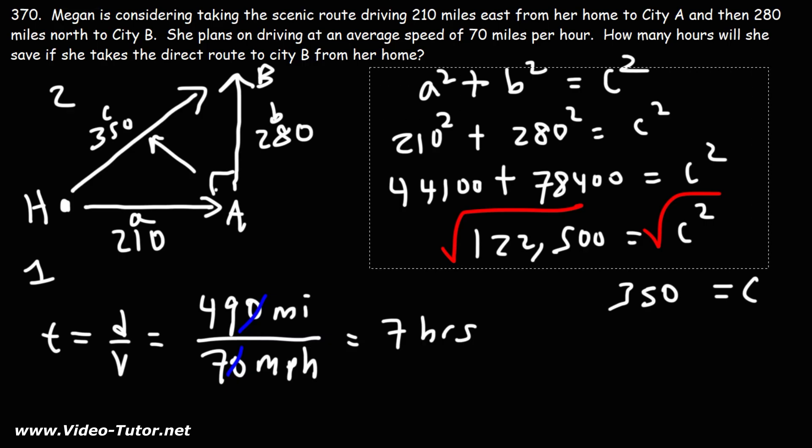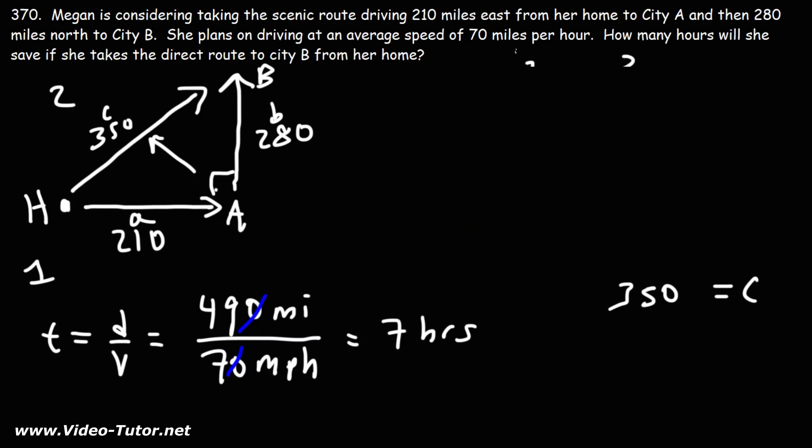So now that we know the distance of taking the direct route from her home to City B is 350 miles, we can find the time it takes to take that route. So 350 miles divided by an average speed of 70 miles per hour. We could cancel a zero. This becomes 35 divided by 7, which is 5.